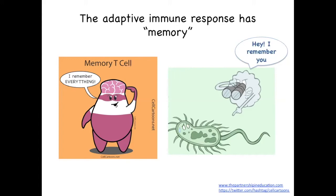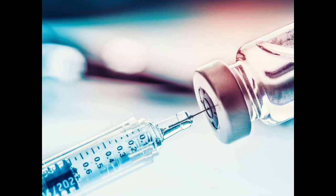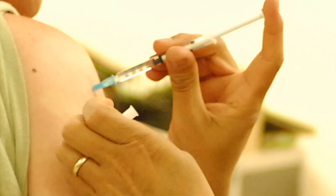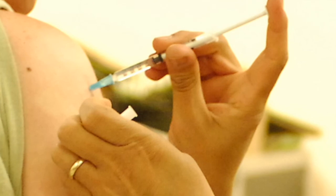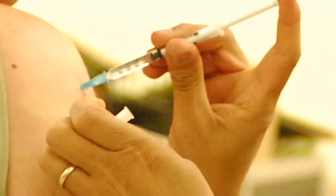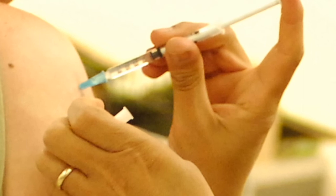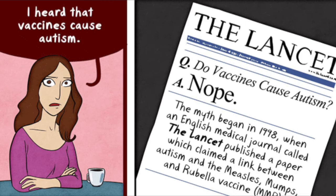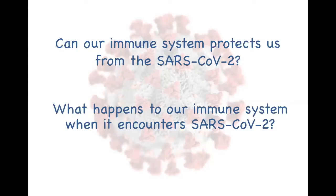Immunological memory is the reason why vaccines are so important and so effective. When we get a vaccine, we teach our immune system how a specific pathogen looks like without generating the disease. And if we do get infected with that same pathogen, we already know how to fight it. So in other words, vaccines are really important and they do not cause autism. Now that you know about our immune system, do you think it can protect us from the SARS-CoV-2 infection? What do you think will happen to our immune system if it encounters this novel coronavirus?